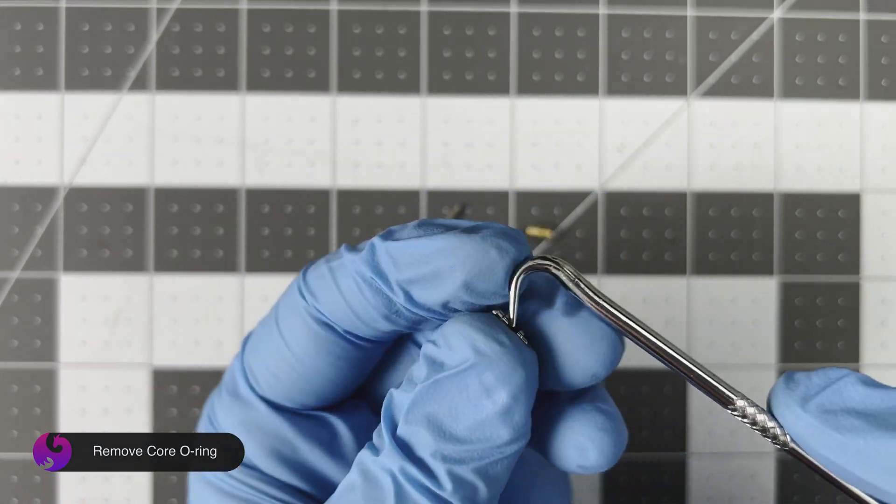Next, replace the O-ring with the yellow colored O-ring from the kit. The hole should be on the other side of where the O-ring sits. Then reinsert the core and screw it back in.